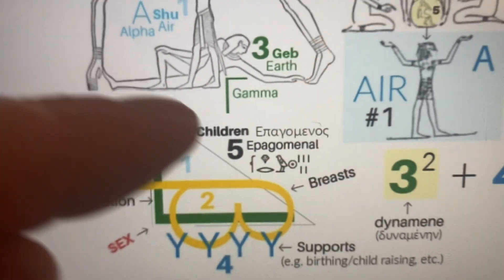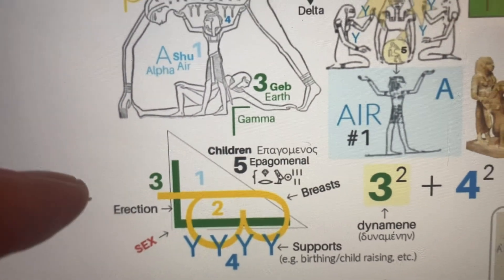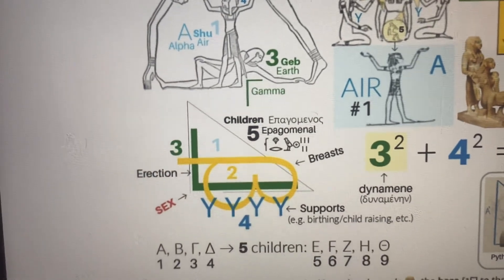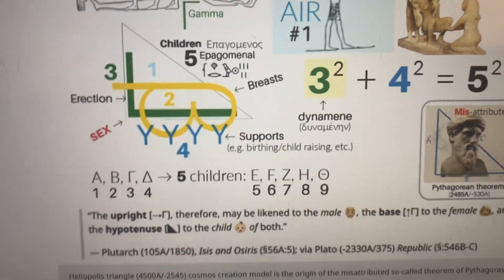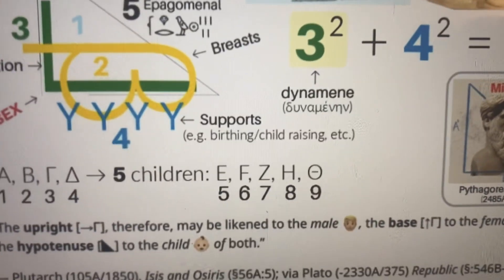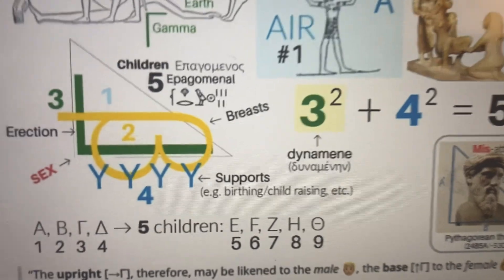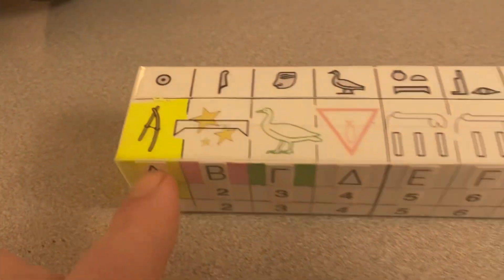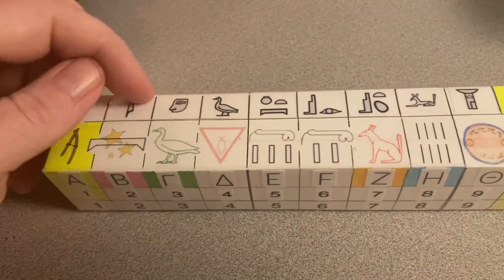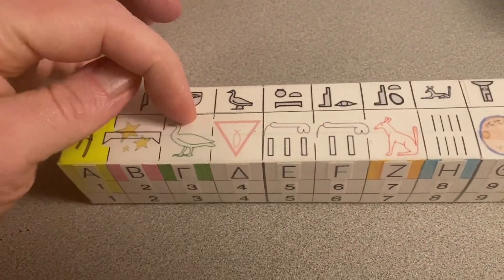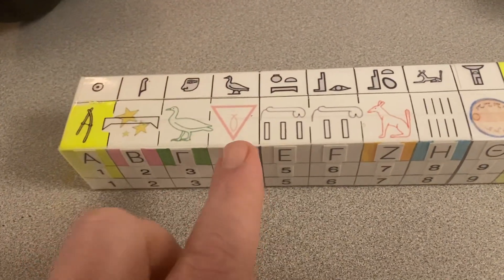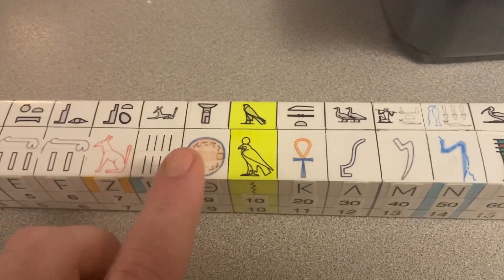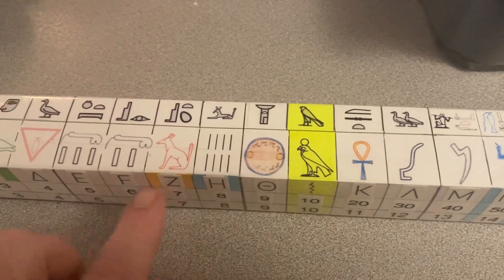And then the hypotenuse is the children — the five Apagomental children. So we get G² + D² = E², where D² is 25. The five Apagomental children are E through Z at the bottom, and that corresponds to Geb having sex with Nut, and then the four children are birthed out at the D — one, two, three, four, five Apagomental children here.